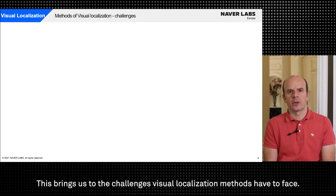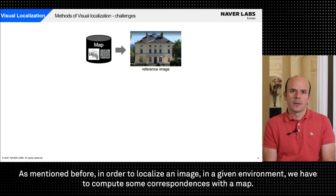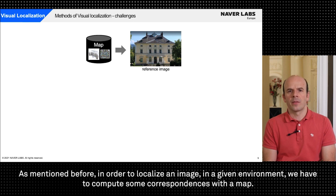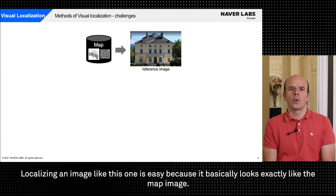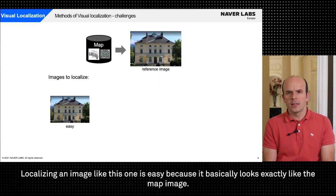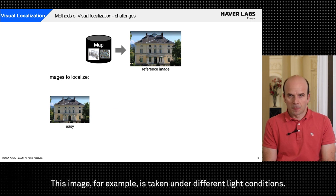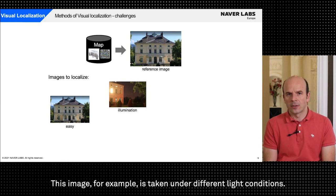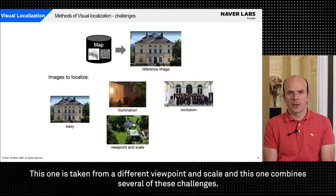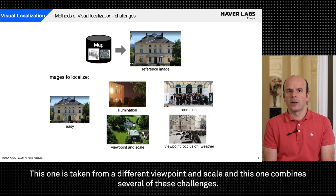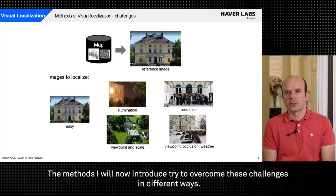This brings us to the challenges visual localization methods face. As mentioned before in order to localize an image in a given environment we have to compute some correspondences with a map. Let's say we have a map like this and this building is represented by only one image. Localizing an image like this one is easy because it basically looks exactly like the map image. But that's of course not always the case in real world applications. This image for example is taken under different light conditions. This contains significant occlusions. This one is taken from a different viewpoint and scale and this one combines several of these challenges. The methods I will now introduce try to overcome these challenges in different ways.